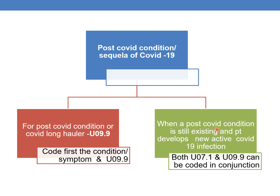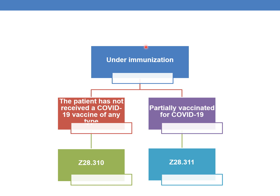The second post-COVID scenario is when a post-COVID condition is still existing and the patient develops a new active COVID-19 infection. For example, loss of taste is a post-COVID condition still existing and the patient develops an active COVID infection again. In that case, both U07.1 (active COVID) and U09.9 (post-COVID condition) can be coded together. For the 2023 new immunization codes: patients who have not received any COVID-19 vaccine are assigned Z28.310, and partially vaccinated patients are assigned Z28.311.